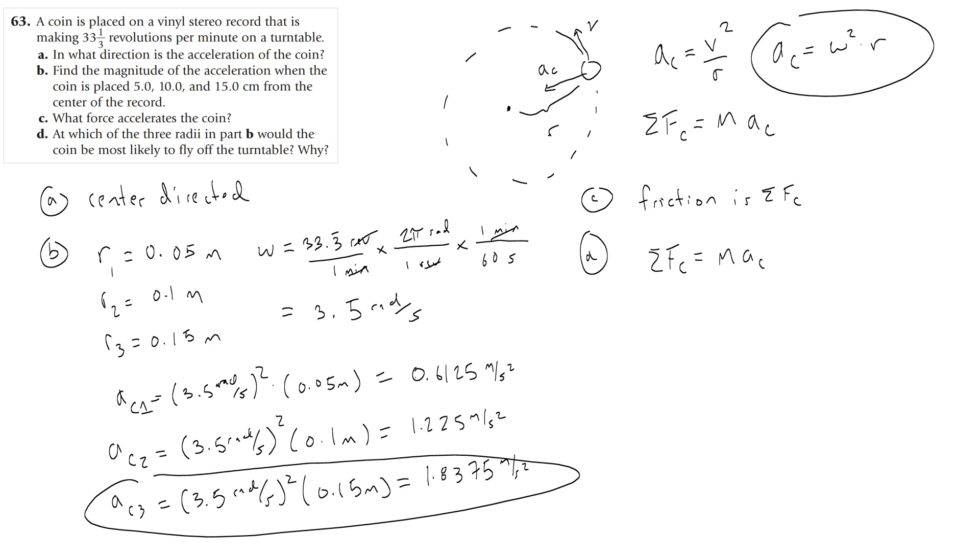And because of that, you would need more friction at that higher centripetal acceleration. So the place where you need the most friction is going to be the place where you're least likely to slip, because the record and the penny can only have so much friction.